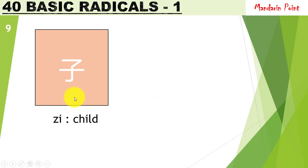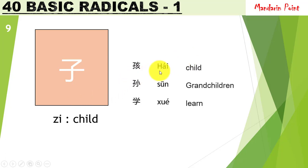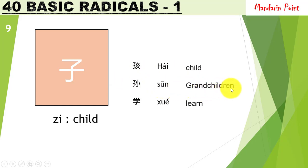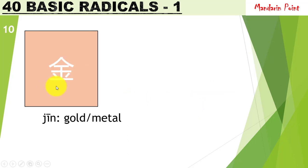The radical 子 zǐ represents something related to a child. For example, 孩 hái meaning 'child' — zǐ is present. 孙 sūn meaning 'grandchildren.' And 学 xué meaning 'to learn' — the child is under a roof for studying.